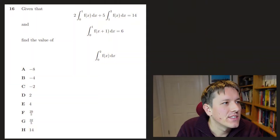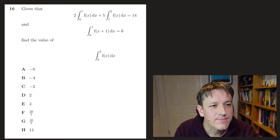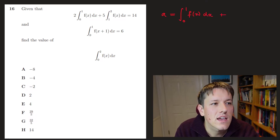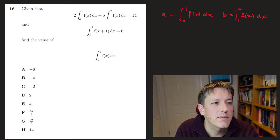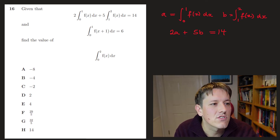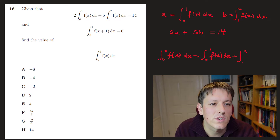This one has a disguised simultaneous equation — it reminds me of an old MATT question with a similar trick. We let a be the integral from 0 to 1 of f(x) dx, and b be the integral from 1 to 2 of f(x) dx. That makes the first equation just 2a + 5b = 14. And the final answer, the integral from 0 to 2, is just a + b.